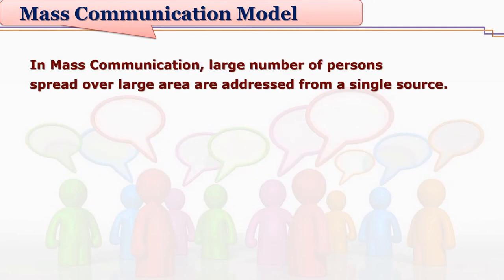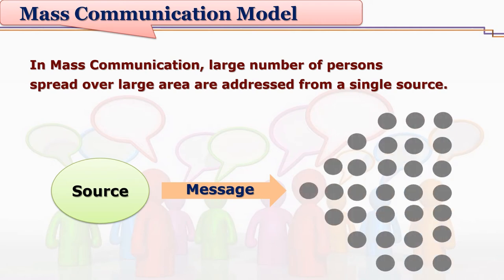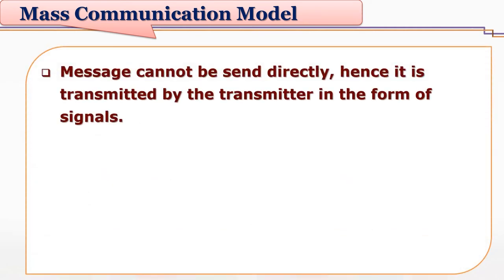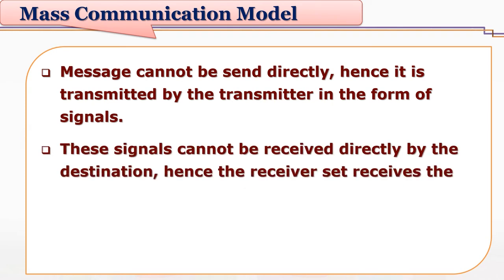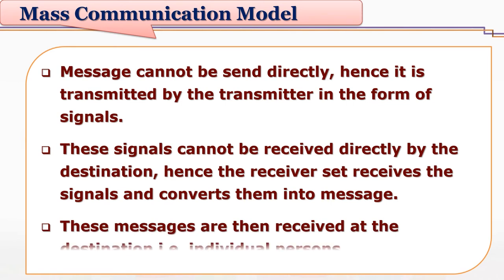We can say that in mass communication, a large number of persons spread over a large area are addressed from a single source. Nobody can directly send them a message — the message needs to be transmitted, and the transmitter receives the message then transmits it in the form of signals. These signals cannot be received directly by the destination, so we require a receiver set to receive these signals and convert them into the message. Ultimately, the individual person sitting at the destination receives this message from the receiver.